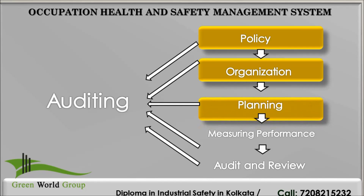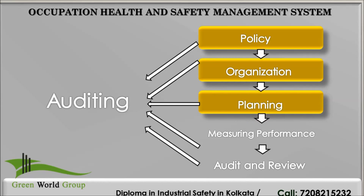The next key element in the Occupational Health and Safety Management System is planning. This section will detail how to implement the safety policy. Planning where there is a need for action to be taken will enable us to prioritize our needs and focus resources.